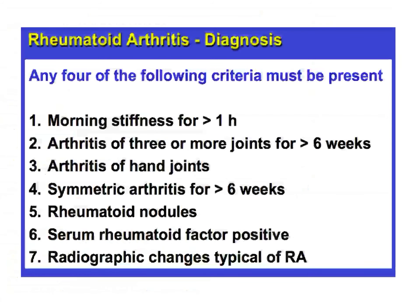Another set of criteria we can use is the 7-criteria system, of which 4 must be positive. These are: morning stiffness of more than 1 hour; arthritis of more than 3 joints for more than 6 weeks; arthritis of the hand or small joints; symmetrical arthritis for more than 6 weeks; rheumatoid nodules; positive serum rheumatoid factor; and radiographic changes typical of rheumatoid arthritis such as osteopenia. If any 4 of these 7 criteria are present, we can diagnose rheumatoid arthritis.